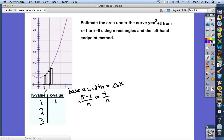So to get the second rectangle, the height for the second rectangle, we're going to plug in an x value of 1 plus 4 over n. Moving over 1 more rectangle to get to the third rectangle, that means we would have to go over 2 widths. So 1 plus 2 times 4 over n.